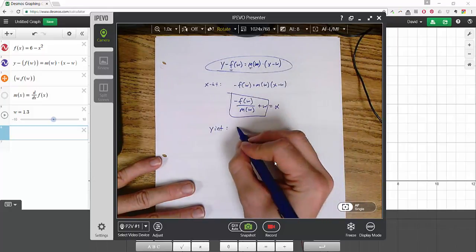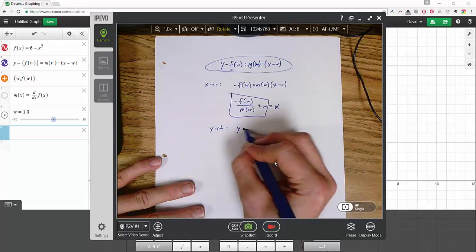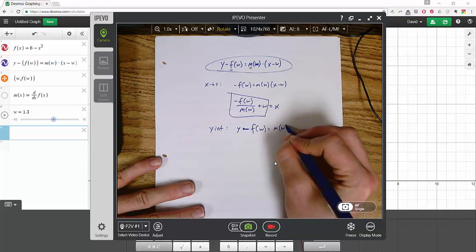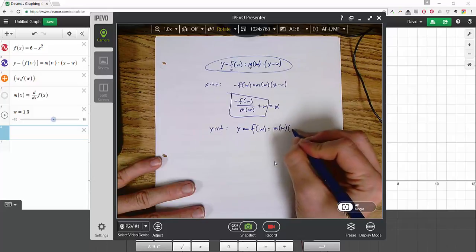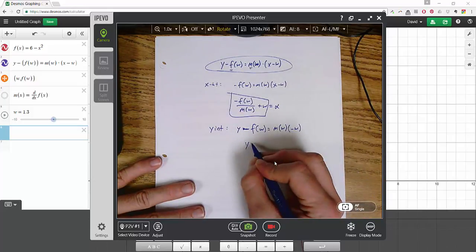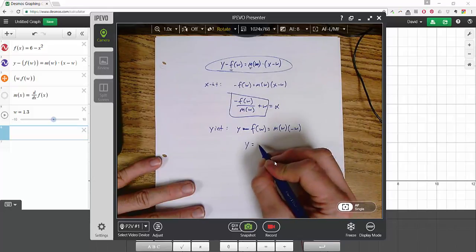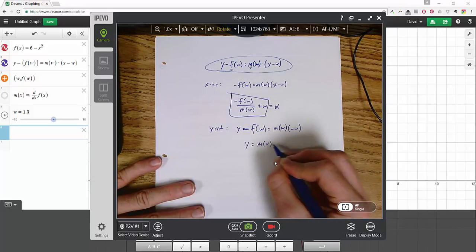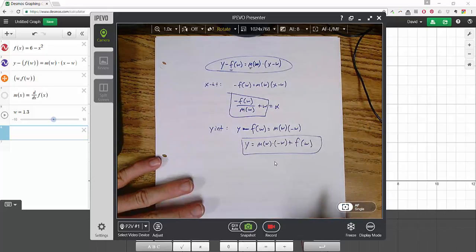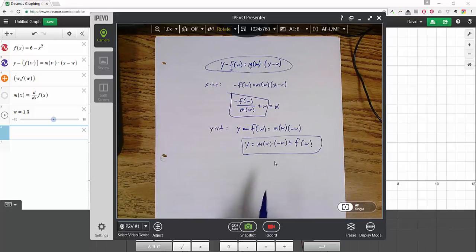So let's find the y intercept same way. So now x will be 0. So I've got y minus f of w equals the slope evaluated at w. But now x is 0. So this is just negative w. So let's add this to both sides. And I've got that the y intercept equals m of w times negative w plus f of w. Okay, cool. So those are the two things. That's the base and the height.